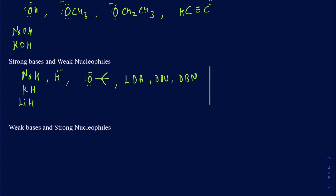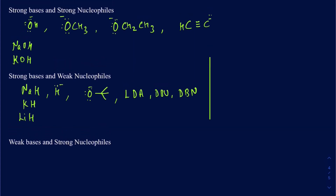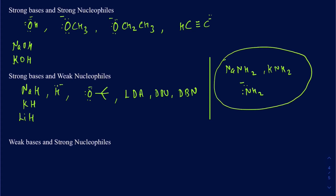Another example that comes to mind is NaNH₂ or KNH₂ — we're talking about NH₂⁻. I'm going to put this in a mixed category between the first and second categories. NH₂⁻ is actually a strong base, and it's also a relatively okay nucleophile — it's not a weak nucleophile — but it doesn't really like to act as a nucleophile. Anytime you use it, it's more likely going to be acting as a base rather than a nucleophile.